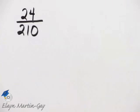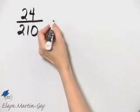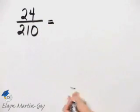So to see if there are any common factors, let's write the prime factorization of each number. In other words, let's write each number as a product of primes.